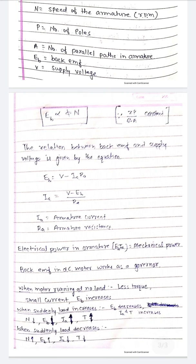Back EMF in DC motor works as a governor. When motor running at no load, the torque produced is less, current is small, and EB increases.